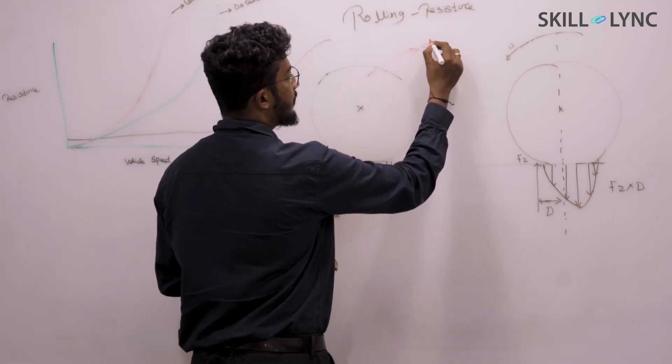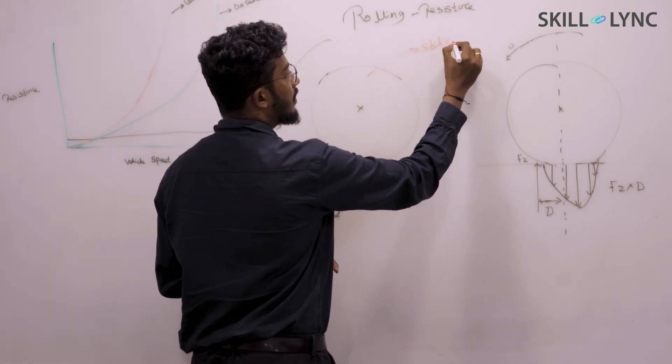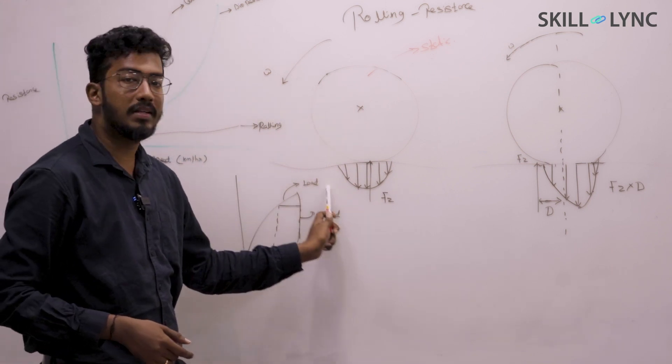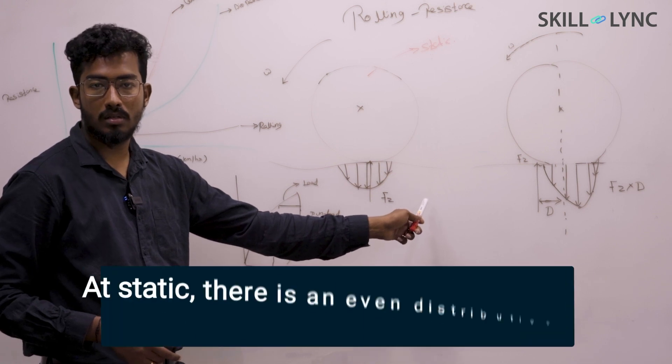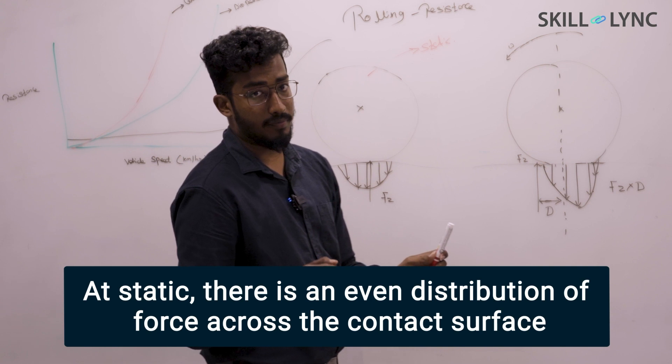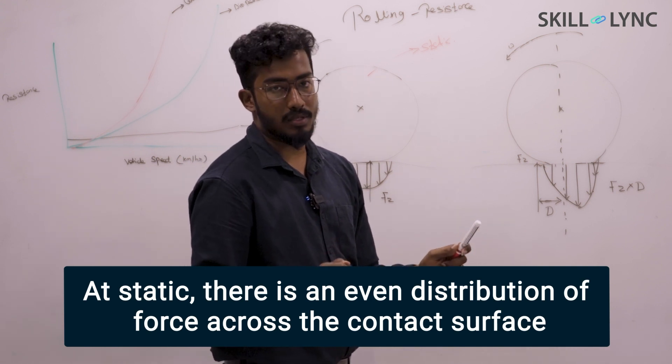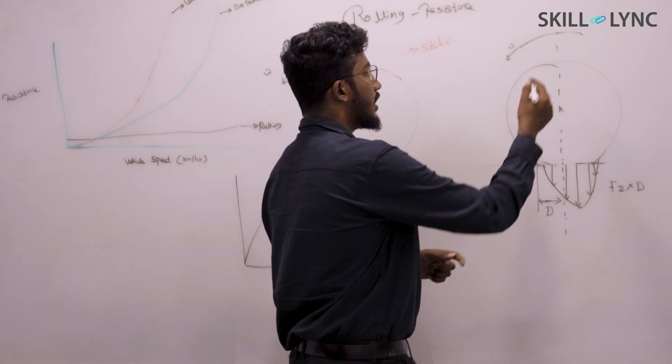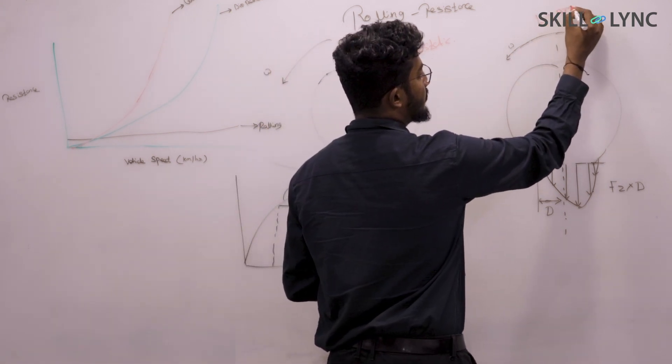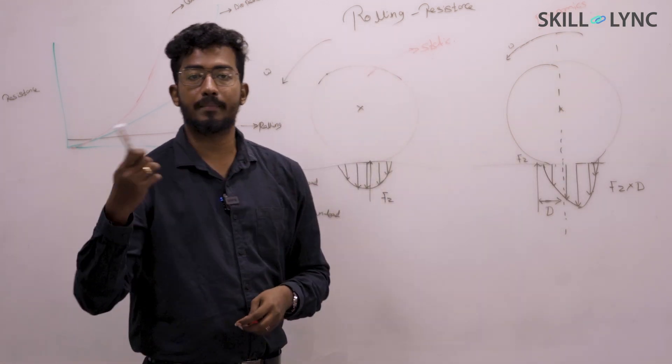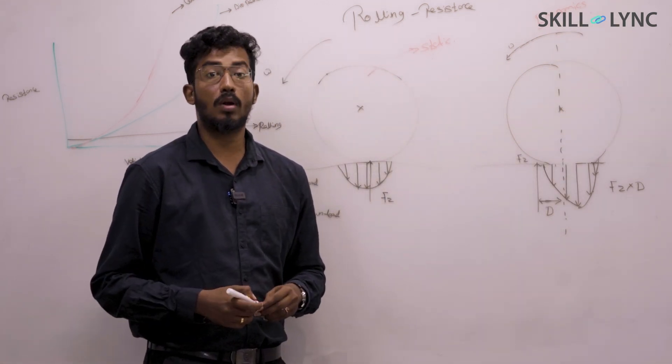This is fine because the pressure is evenly distributed all through the contact patch in static condition. But the problem comes in during dynamic condition, meaning when your vehicle starts rolling. What's going to happen?